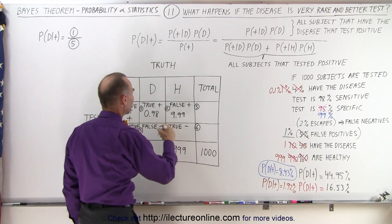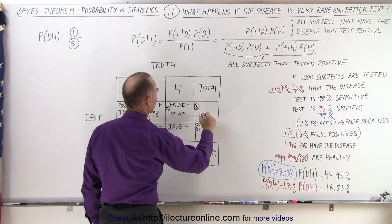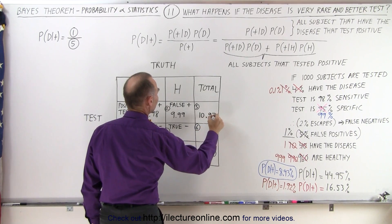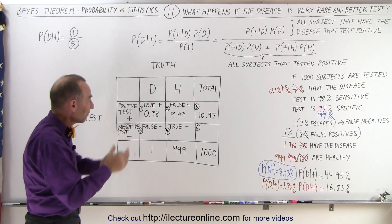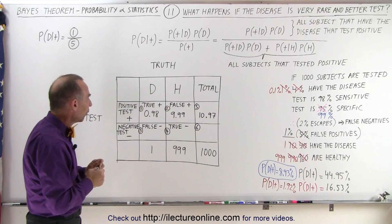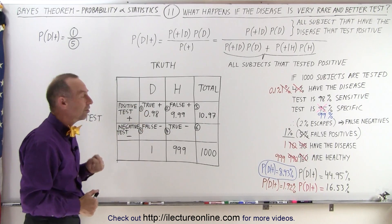When you add these two together, that adds up to 10.97. So that's the total number of subjects that will test positive, basically 11. Only one will test positive that actually has the disease.